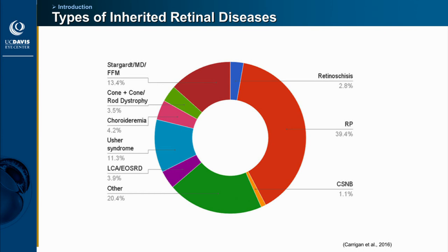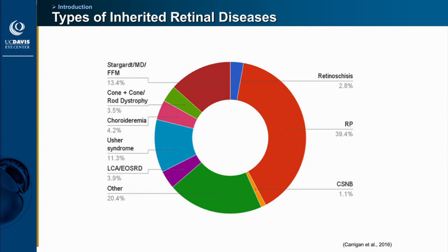One of the problems with inherited retinal diseases is that they're mostly orphan diseases — not very common. Most are classified as retinitis pigmentosa, but with advances in genetic testing we're beginning to understand that while these share similar clinical presentations, there are dozens of different genes that can cause a single disease. Even more complex, different mutations within the same gene can give you different diseases.